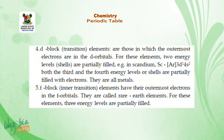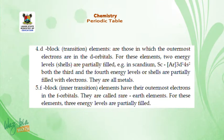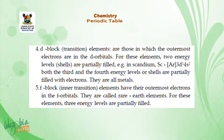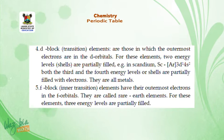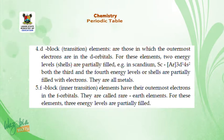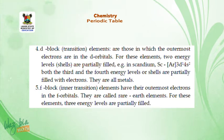Number 4 is D block or transition elements — these are elements in which the outermost electrons are in the D orbitals. For these elements, two energy levels or shells are partially filled. In scandium, with the argon configuration and 3D1, 4S2, both the third and the fourth energy levels or shells are partially filled with electrons. They are all metals. Number 5 is F block or inner transition elements. They have their outermost electrons in the F orbitals and are called rare earth elements. For these elements, three energy levels are partially filled.